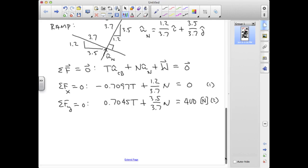Now, there's a lot of ways to solve this. One of the things I can do is just take the ratio 0.7045 over 0.7097. I can multiply that by equation 1 and add it to equation 2. When I do that, the term involving the tension will fall away, and I'll be left with just a single equation in the normal force magnitude. So, that will end up looking like this ratio times 1.2 over 3.7 plus 3.5 over 3.7 times the normal force magnitude equals 400 newtons.